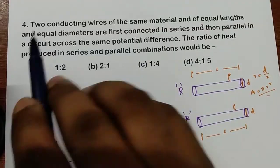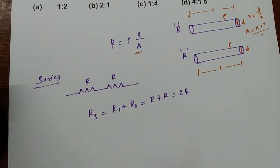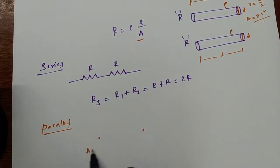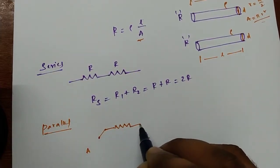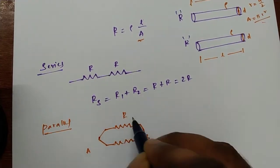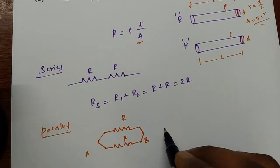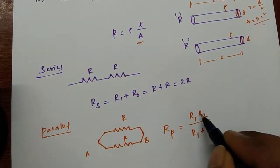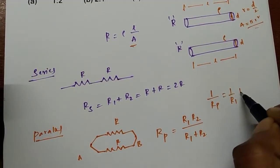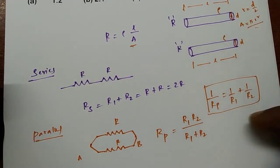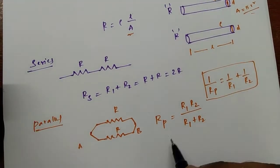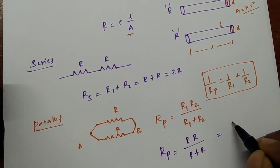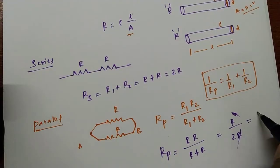And then they are connected in parallel. Let me take two nodes A and B, with the first resistance R and second resistance R connected between them. The effective resistance in parallel: R parallel equals R1 times R2 divided by R1 plus R2. Applying the formula: R parallel equals R times R divided by R plus R, which is R squared divided by 2R. So R parallel equals R by 2.